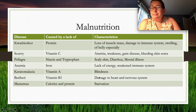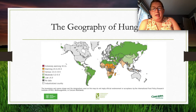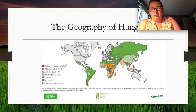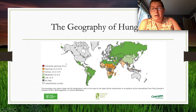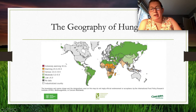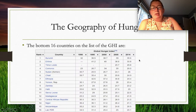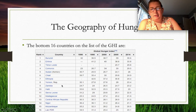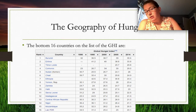Here is a map of global hunger: red indicates extreme hunger, while white represents industrialized areas — North America, Australia, and Central Europe. Some countries show low or no data. The bottom 16 countries on the Global Hunger Index are largely peripheral or developing countries, showing a clear correlation between hunger and underdevelopment.